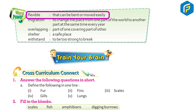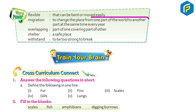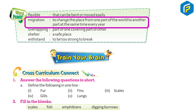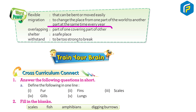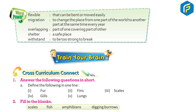Word Power: Flexible — that can be bent or moved easily. Migration — to change place from one part of the world to another at the same time every year. Overlapping — part of one covering part of another. Shelter — a safe place.